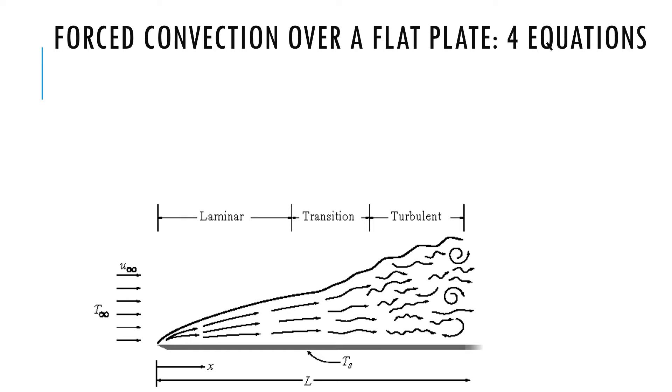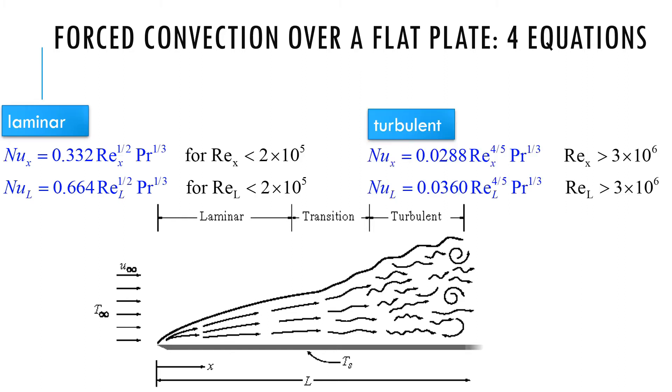For such forced flow over a flat plate, we can have two different situations, laminar and turbulent. Notice the interesting part that if you recall, we were expecting to find from the analysis of flow and heat transfer equations, we were expecting to find H equation of the form like this.